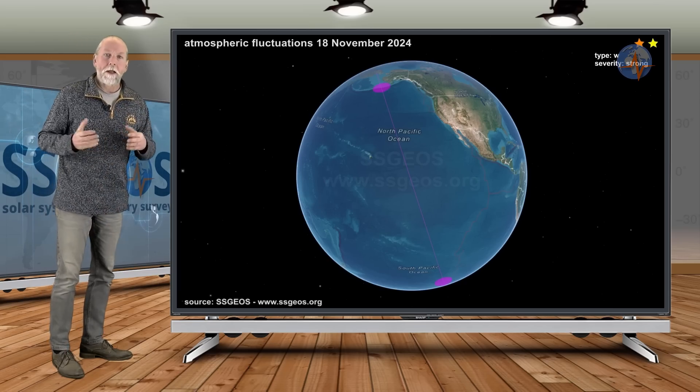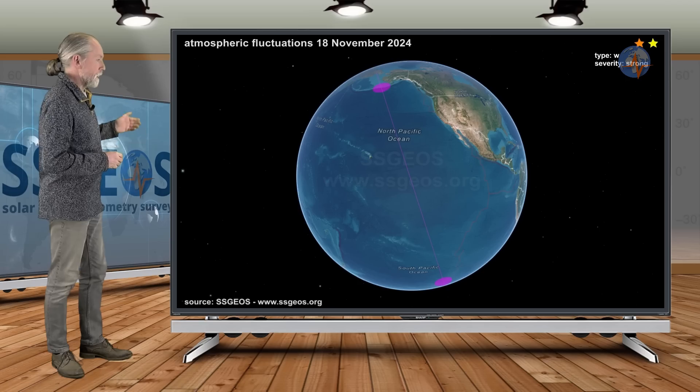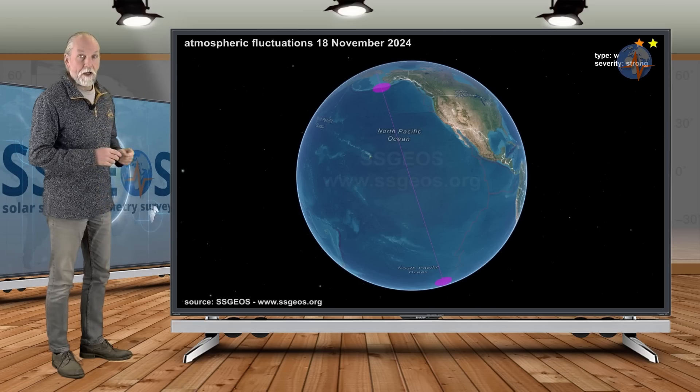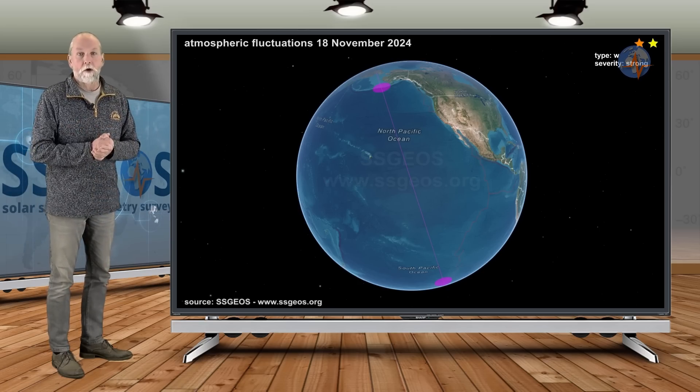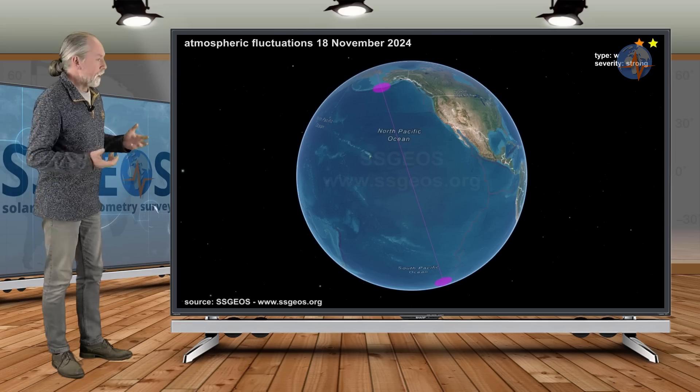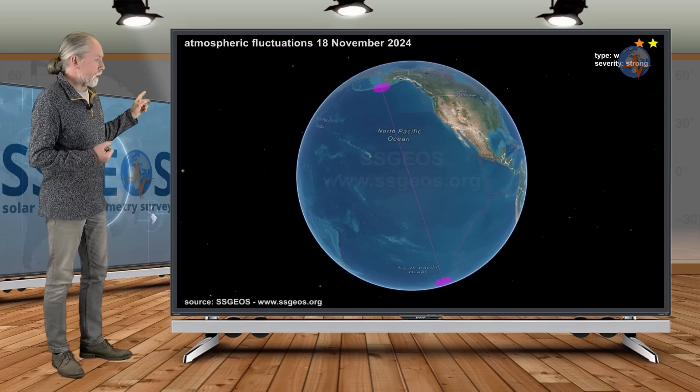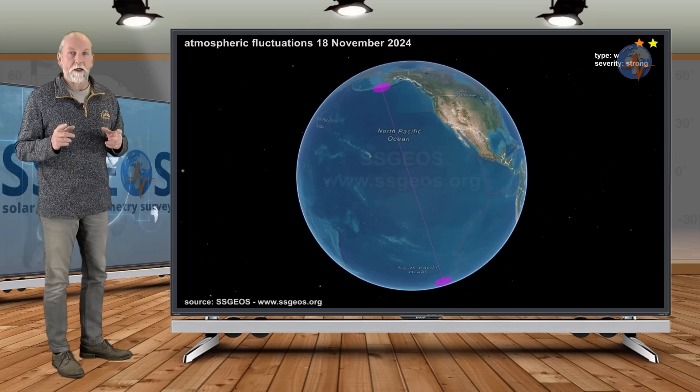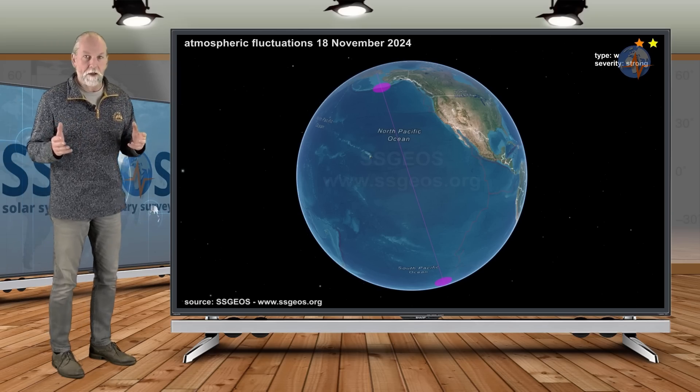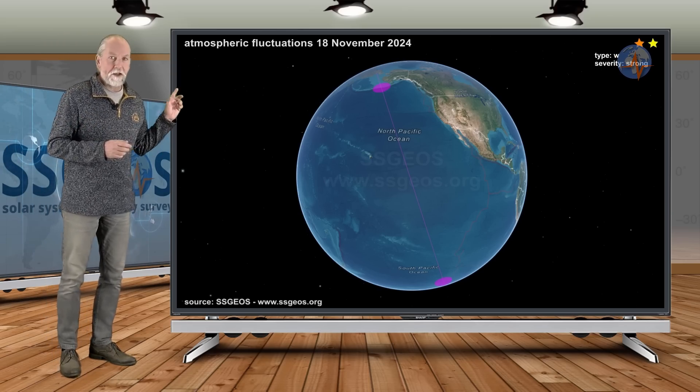If we look at the atmospheric fluctuations, the latest fluctuations were from yesterday. They mark the North Pacific, and the North Pacific has been marked by atmospheric fluctuations since the 12th. There could be a seismic response there.